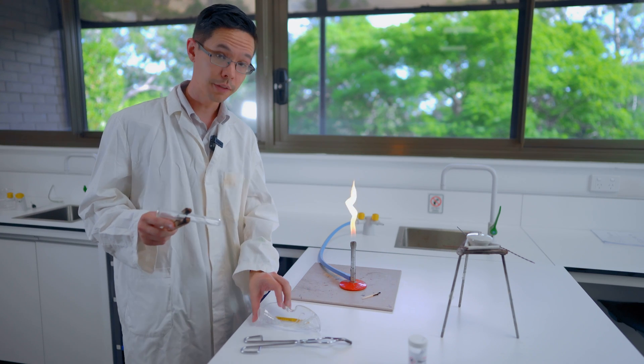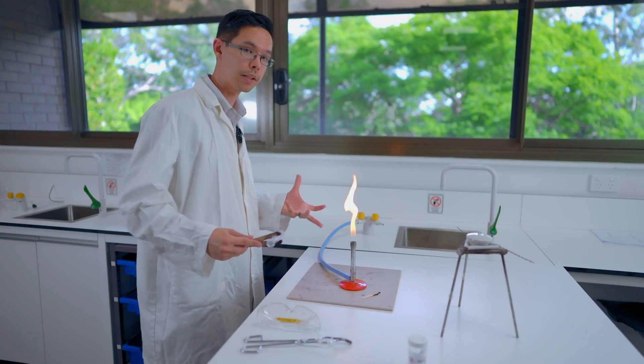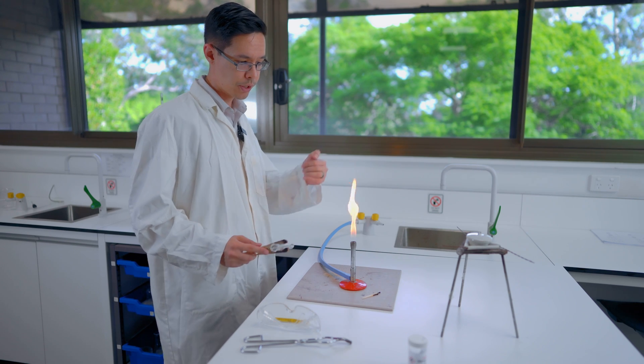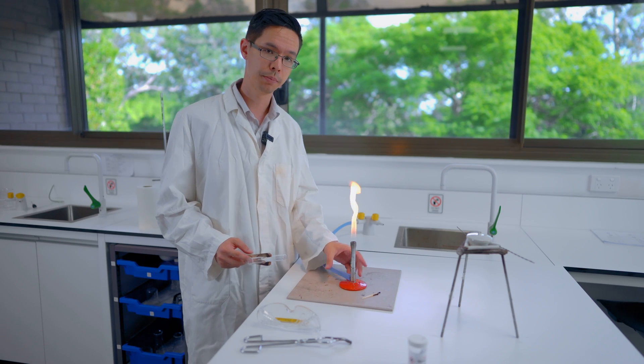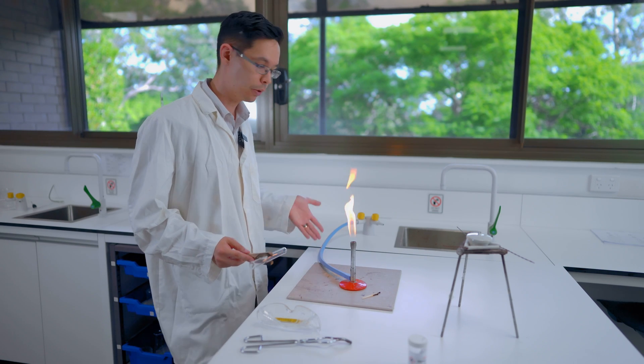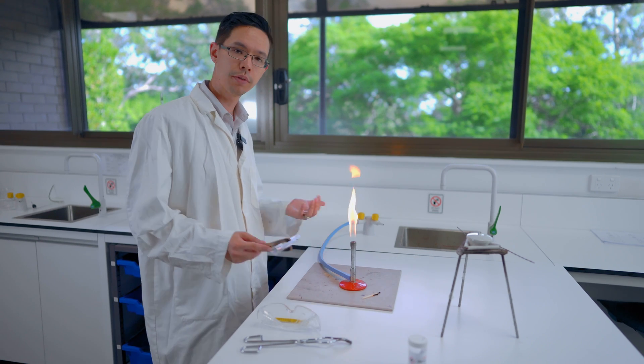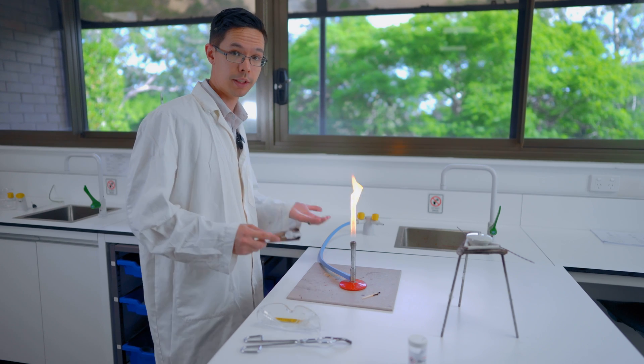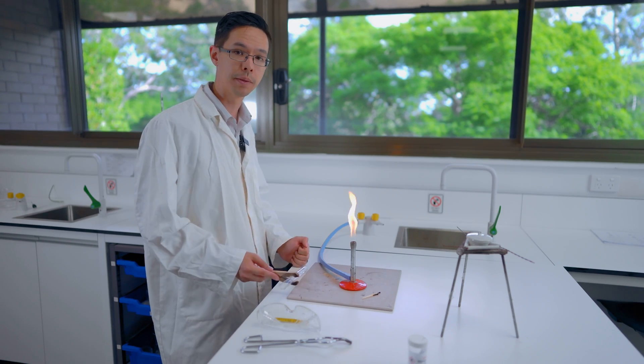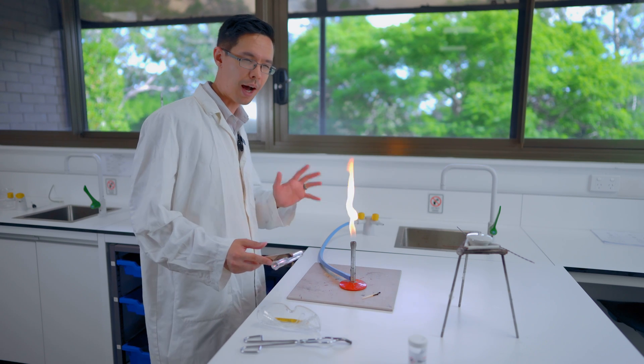One thing that we can see is that if the combustion is incomplete combustion, we are basically not being at 100% efficiency. So here I've closed the barrel of the Bunsen burner, so I'm starving it of oxygen. And so not all of the hydrocarbon fuel is actually getting access to the oxygen. It can only get access to oxygen that's nearby. So some of it is only half combusted.